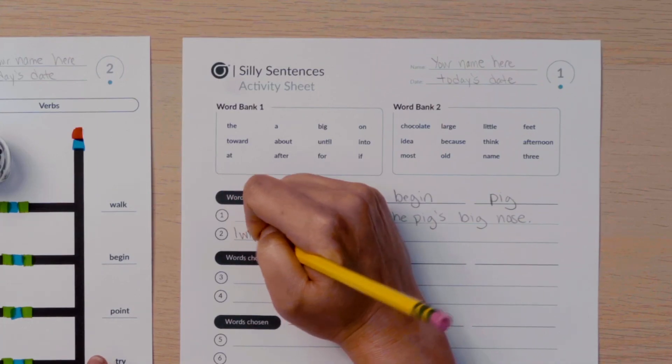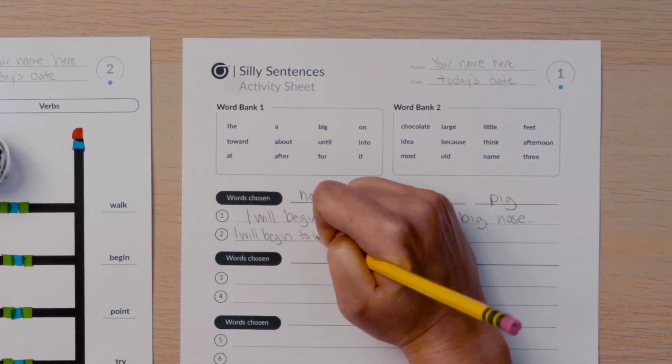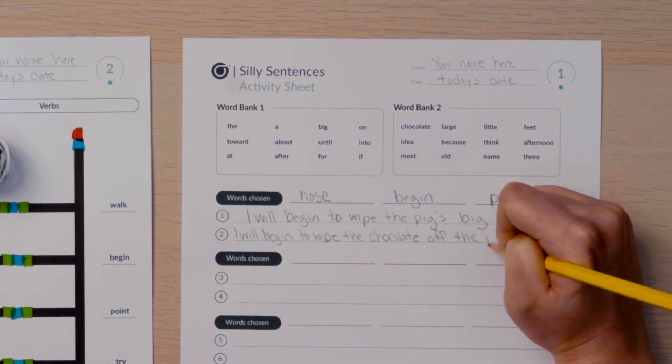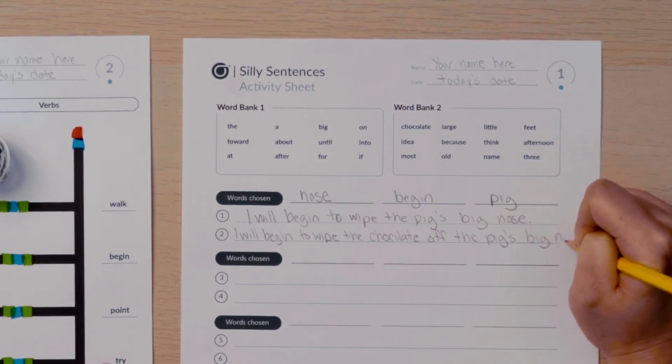To make your first sentence, use the words your Ozobot chose and the words from word bank one. For the second sentence, use the nouns and the verb your bot chose and words from word banks one and two.